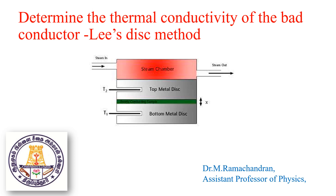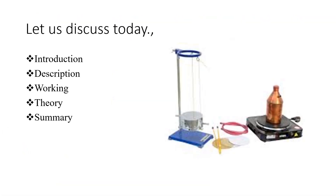The temperature on the bottom and top surfaces of the metal disc is measured by sensitive thermometers T1 and T2 inserted there. Let us discuss in detail how we calculate the thermal conductivity of the bad conductor, introducing the Lee's disc apparatus with two thermometers to measure temperature at each instant. The bad conductor cardboard is cut into a circular shape.